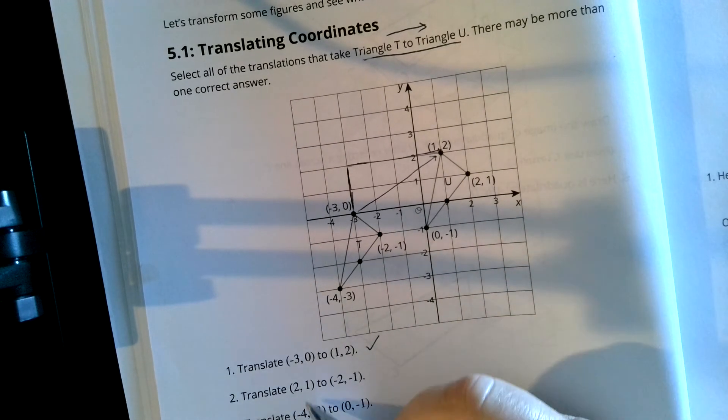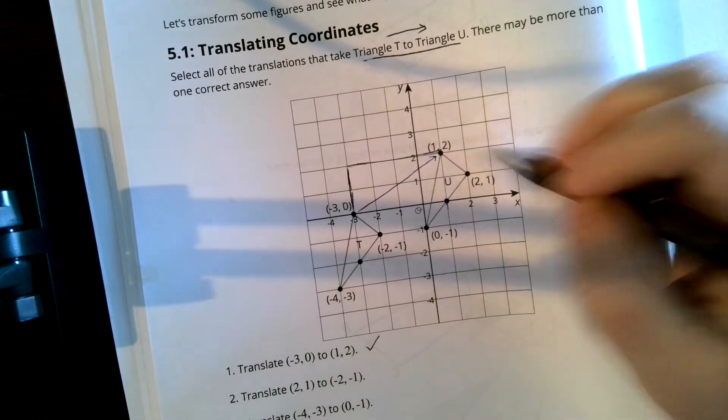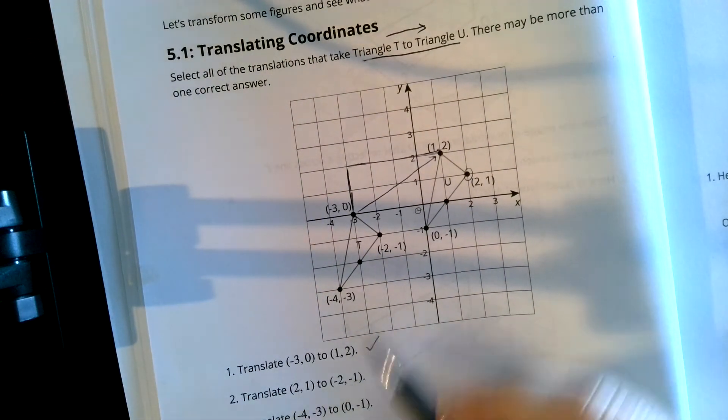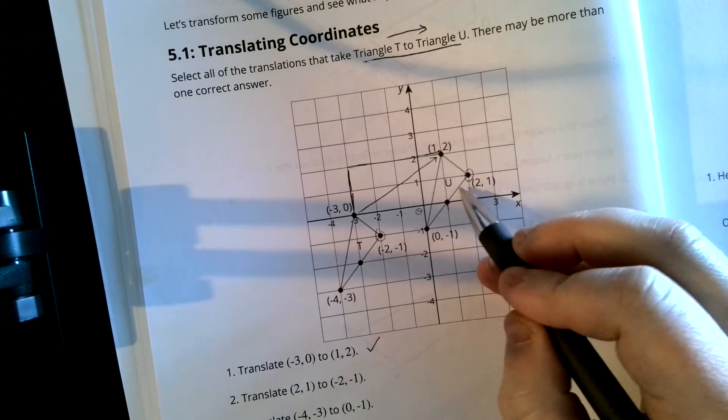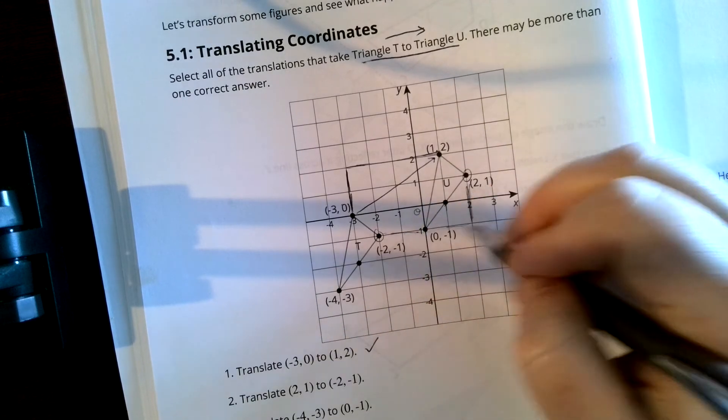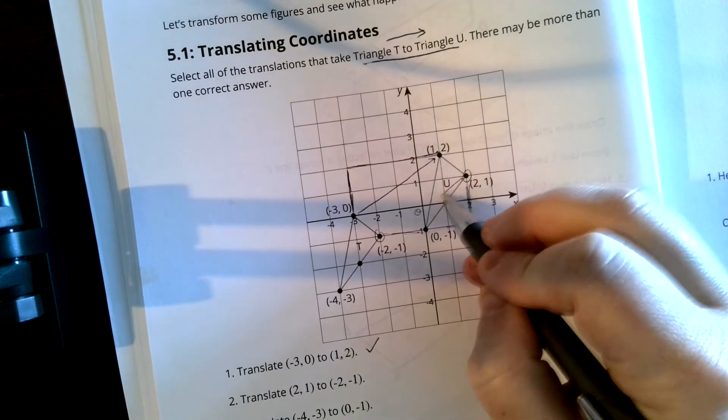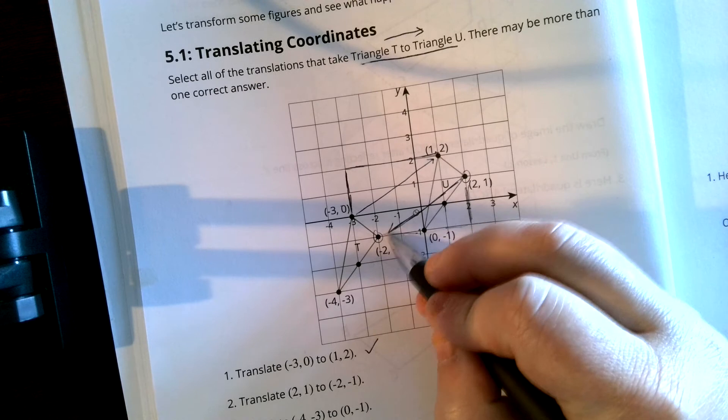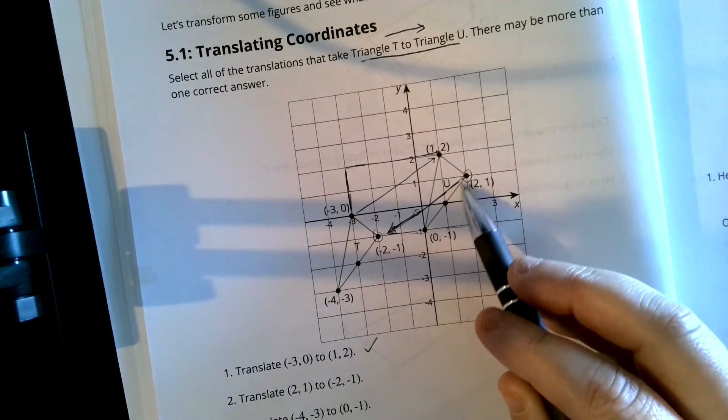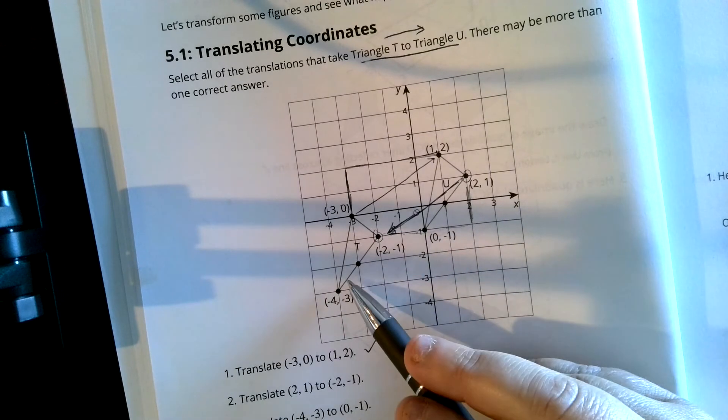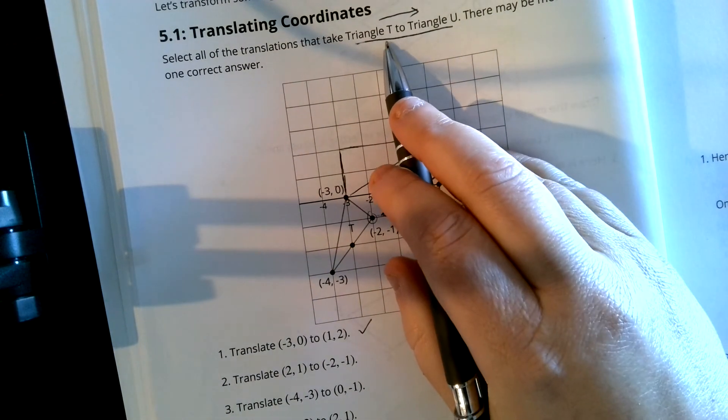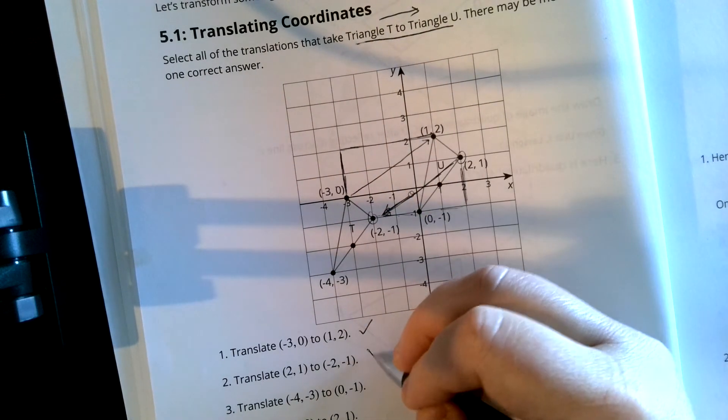Now, if we looked at (2, 1), which is right here, and to (-2, -1), that would be here. Yes, this was going down 2 and over 1, 2, 3, 4. But what it's doing instead is it's taking it from U to T. And if we remember, we're trying to go from T to U. So even though we can translate from U to T, it's not correct in this case because we want to translate from T to U. So this one's no.